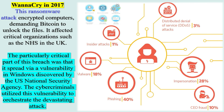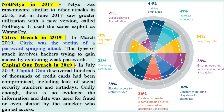NotPetya in 2017: Petya was ransomware similar to other attacks in 2016, but in June 2017 a new version called NotPetya saw greater utilization, using the same exploit as WannaCry. Citrix Breach in 2019: In March 2019, Citrix was the victim of a password-spraying attack, which involves hackers trying to gain access by exploiting leaked passwords.